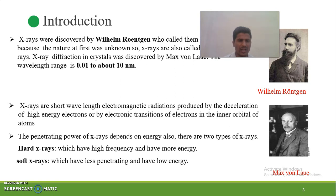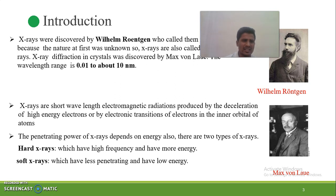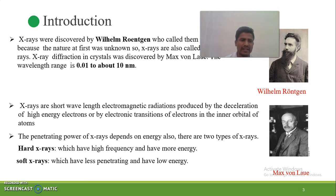Hard X-rays have high frequency, more energy, and greater penetration power. Soft X-rays have less penetration and low frequency. In simple words, X-rays are short wavelength electromagnetic radiations produced by deceleration — whenever high-energy electrons interact with a metal target, they produce X-rays.